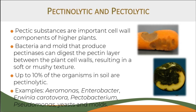Pectic substances are important cell wall components of higher plants — basically vegetables and fruits. They're kind of the glue that connects the cell walls together. Bacteria and fungi can break down this glue as well, which will cause the collapse of the cell wall and cause the rotting of the vegetable.